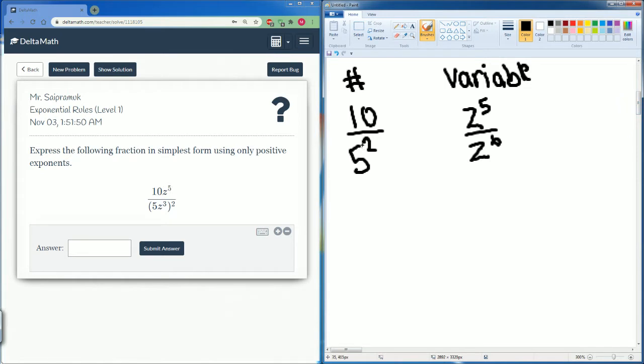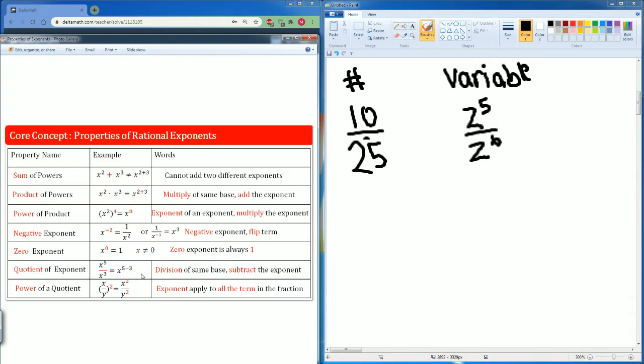10 divided by 5 squared becomes 25 and here you can see that it is a quotient of an exponent. When you have division of the same base which is z you subtract the exponent. So you're going to have z 5 minus 6 so you're going to have z negative 1. And here you have 10 over 25 which can be simplified into 2 over 5.